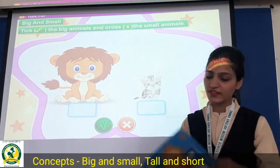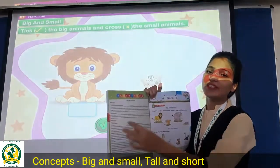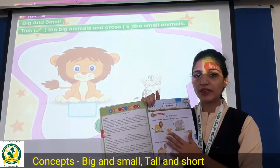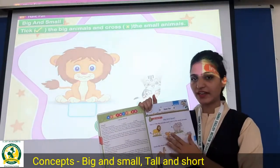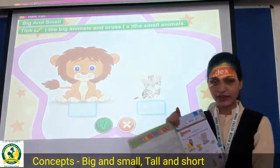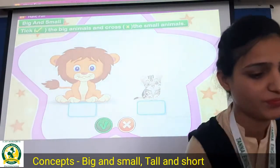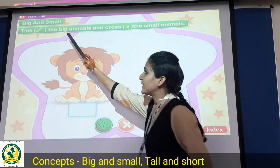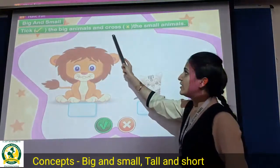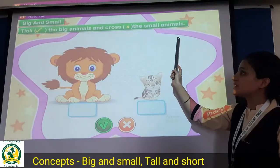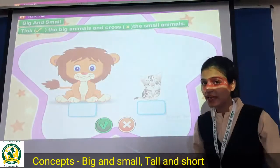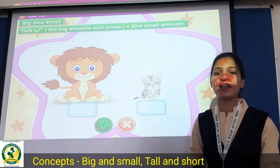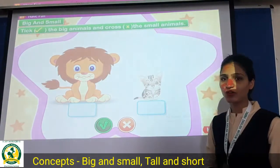Now students, we will do the exercise part. You have to tick the big animals and cross the small animals. Tick the big animals and put a cross on the small animals.